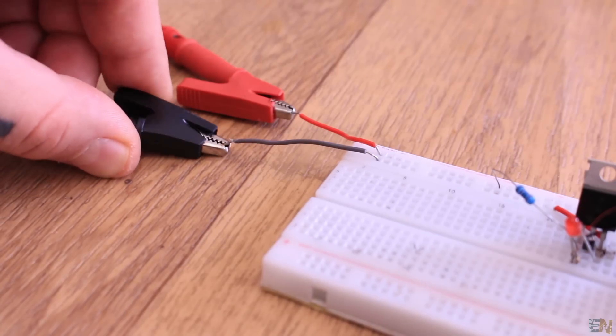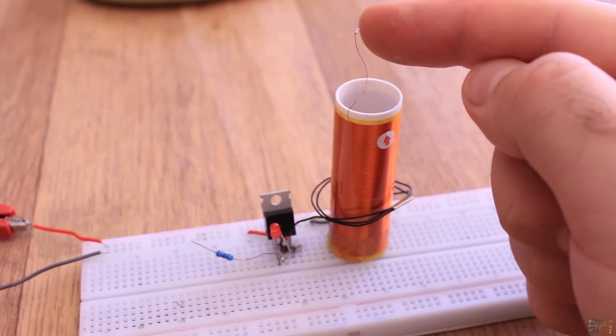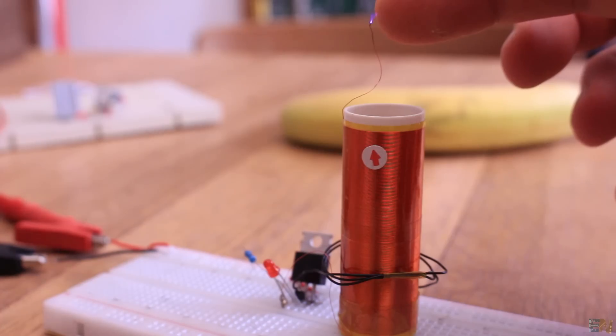When I supply power to the circuit, around 15V, as you can see, a very weak voltage arc is created at the end of the secondary copper wire.